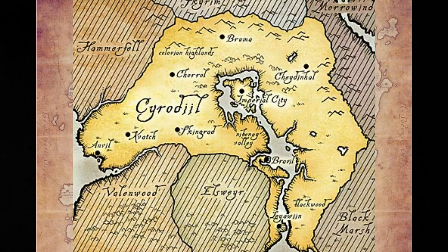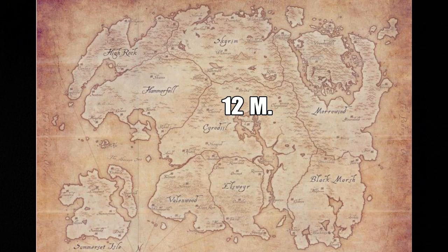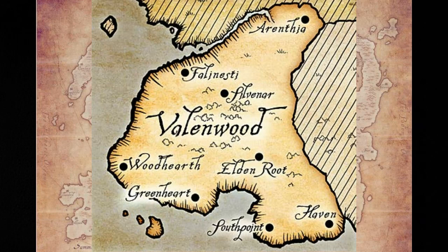I would assume the Imperial City has about 4 million people, and the rest of Cyrodiil has another 11 million — a total of 15 million for the pre-Great War era. After the Great War, it's probably closer to 12 million, because the Imperial City was sacked and destroyed. Accounting for civilians who died in occupied territories and soldiers lost during the war, it's reasonable to assume about 3 million people died. So 12 million is a good standing estimate for Cyrodiil's current population.